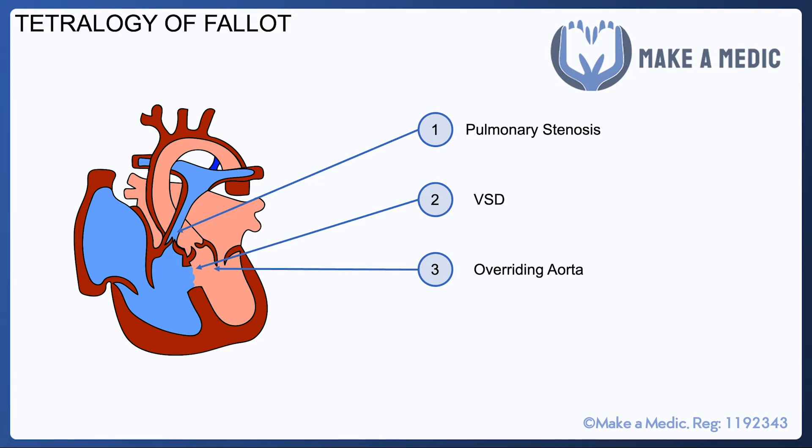Finally, given that the right heart is having to pump against quite higher pressures than it's used to because of the pulmonary stenosis and the overriding aorta, you get right ventricular hypertrophy as well.